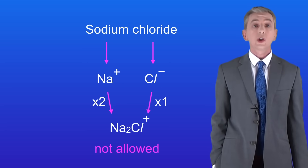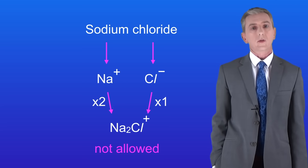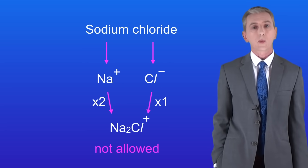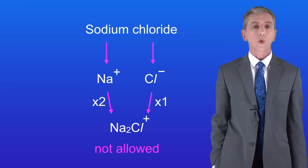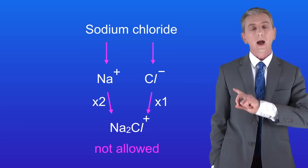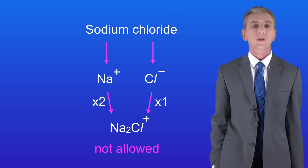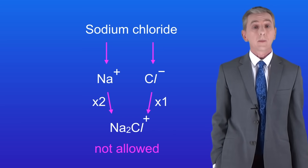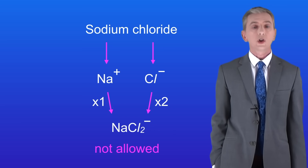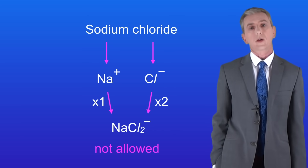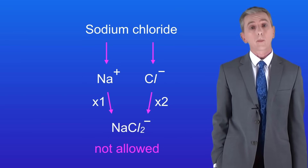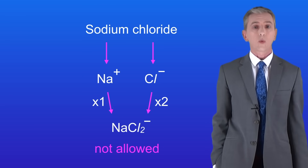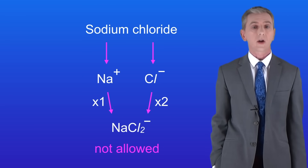If we had two sodium ions then the compound would have an overall 1+ charge, which is not allowed. Similarly, if we had two chloride ions then the compound would have an overall 1- charge, and again that's not allowed.